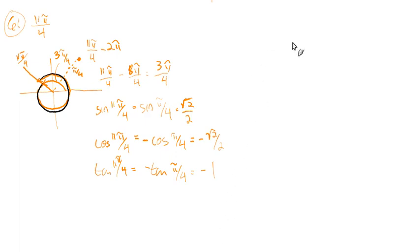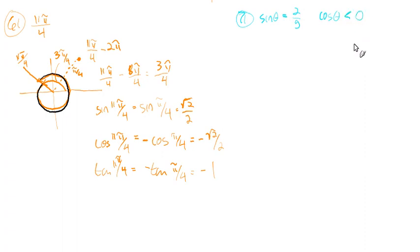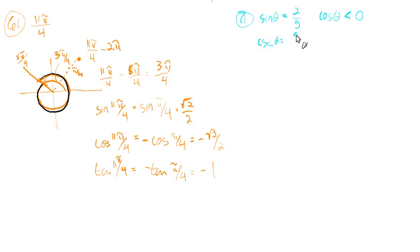On to number 71. The sine of theta equals 2/5, and the cosine of theta is less than zero — it's negative. They want us to use the given trig value and trigonometric identities to find the remaining trigonometric functions. If the sine is 2/5, then the cosecant — that's an easy one — has to equal 5/2.